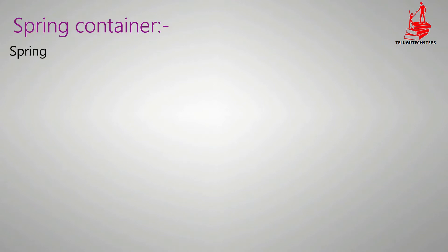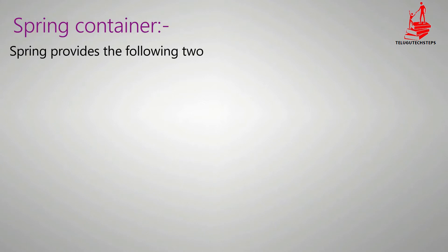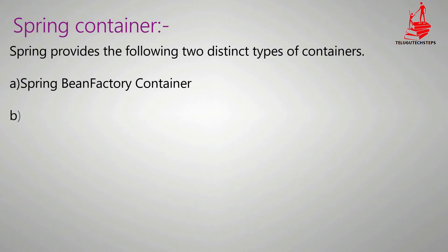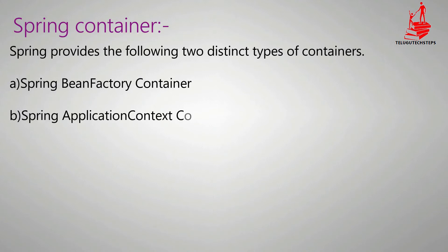Spring provides two different types of containers. The first is the Spring BeanFactory Container, and the second is the Spring ApplicationContext Container. The BeanFactory Container is completely XML-format based and is a basic container. When you move to the ApplicationContext Container, it supports both ways and is somewhat more advanced.